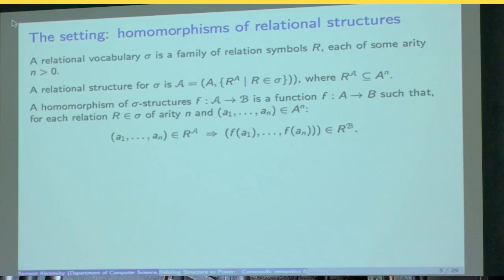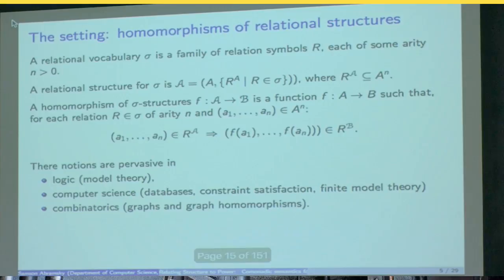And a homomorphism of such structures is just a function on the underlying sets which preserves all the relations in this obvious sense. So if you think of simple graphs, they're just the case where you have a single relation which is irreflexive and symmetric, and then the homomorphisms are the graph homomorphisms. Or if you think of partial orders, then that would give you, and monotone maps, that would be another example.